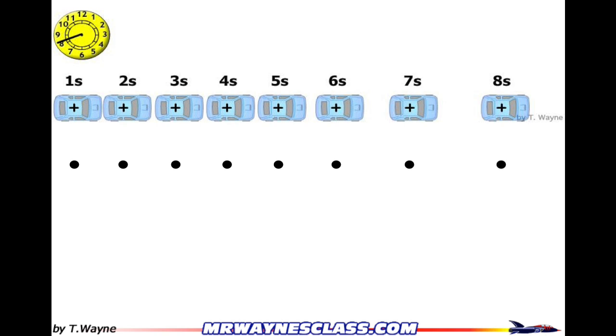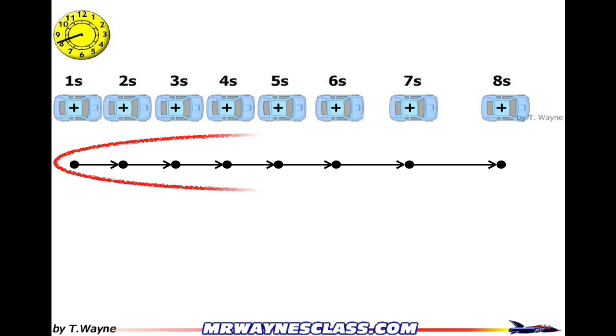And then what I'm going to do is I'm going to take an arrow starting from the very beginning and I'll connect the dots with the arrow. There we go. That right there, that in the red circle is the motion diagram.